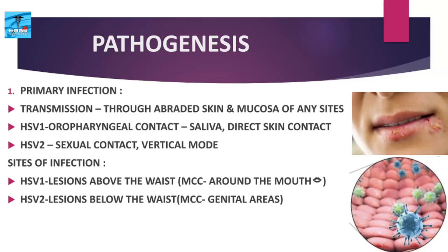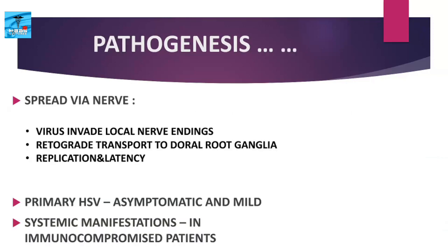Regarding site of infection, for HSV1, lesions occur above the waist, most commonly around the mouth. For HSV2, lesions occur below the waist, most commonly in the genital areas. After infection and replication at a local site, the virus spreads via the nerve — it invades the local nerve endings and is transported by retrograde axonal flow to the dorsal root ganglia.